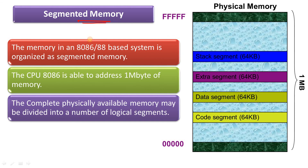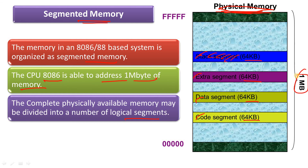Coming to the segmented memory concept: memory in an 8086/8088 based system is organized as segmented memory. The CPU 8086 is able to address one megabyte of memory. The complete physically available memory may be divided into a number of logical segments: stack segment, extra segment, data segment, and code segment. Each selected memory segment is 64KB. The total memory is 1MB represented from address 00000H to FFFFFH in hexadecimal, where each hex digit represents 4 binary bits, giving 5 into 4 equals 20 address bits total.